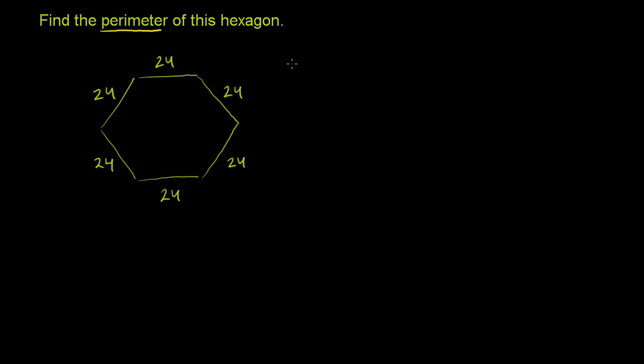So the perimeter is going to be 24. So how many of these do we have? We have one, two, three, four, five, six 24s, which makes sense, because the hexagon has six sides.